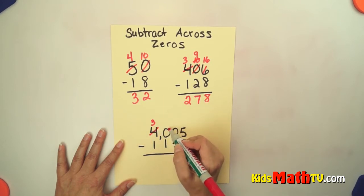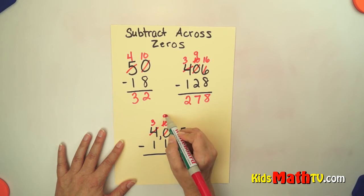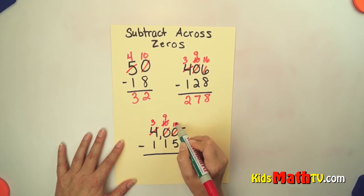That 4 becomes 3. And now this is 10. But I still don't have anything to borrow here. So I'm going to borrow from this 10. That becomes 9. And now this becomes 10.